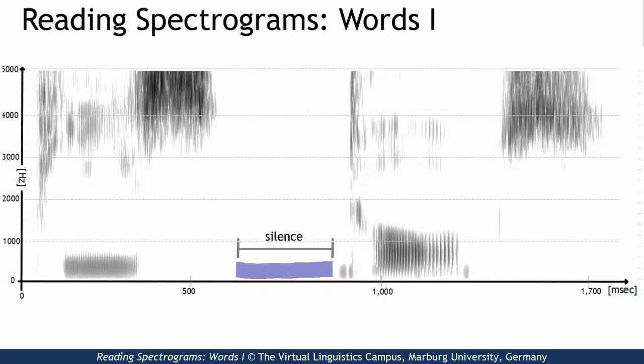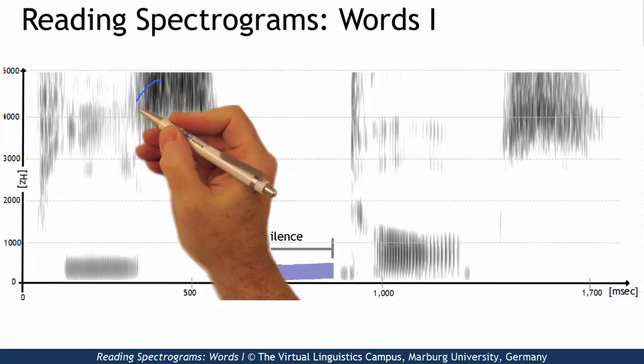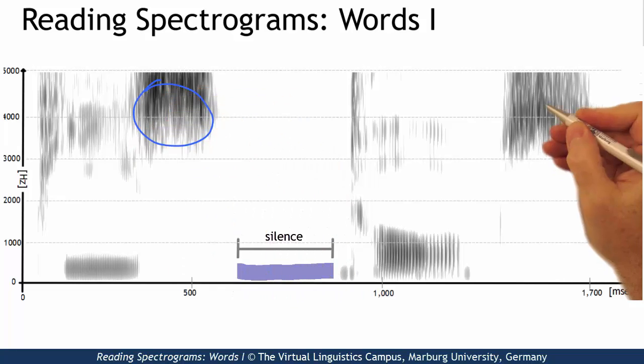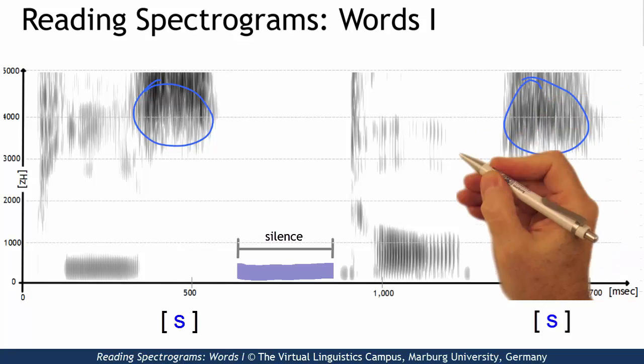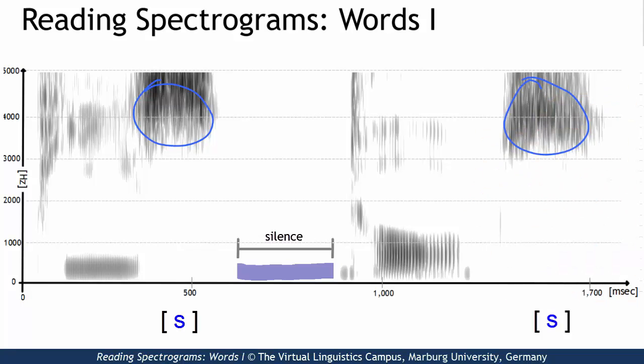Both parts have a final voiceless fricative with high frequency friction noise, thus they are likely to be voiceless alveolar fricatives. Each part involves a relatively long vowel of about 250 milliseconds.